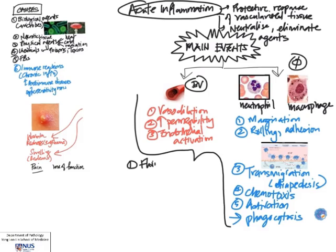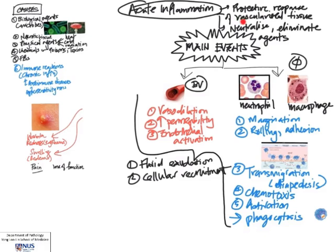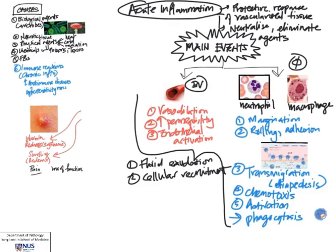One outcome is fluid exudation at the site of inflammation, which is important because it brings many important chemical mediators to that area. The second outcome is cellular recruitment. Essentially, we are bringing fluid and leukocytes to the site, because a lot of the important chemicals that drive inflammation are derived from fluid and from cells.